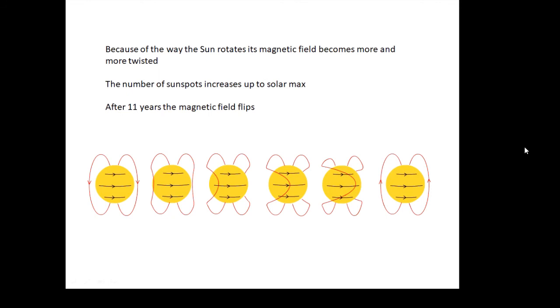It's going to get twisted in the middle as the sun carries it with it, and the number of sunspots increases more and more as the field gets more and more twisted. And then after 11 years there's a big release of energy and the sun's magnetic field flips over. Every 11 years it flips over and then the cycle starts again.